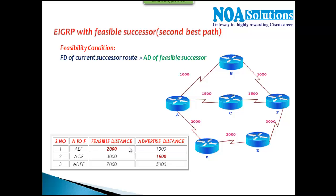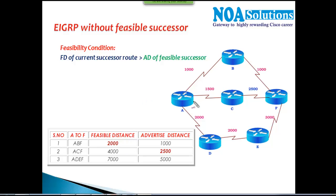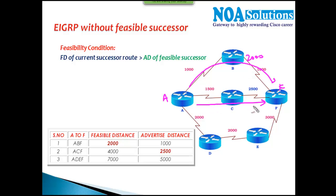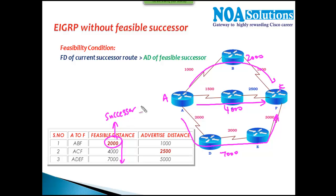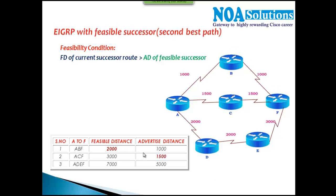Now let's look at the same topology with modified costs. From router A to router F there are again three routes. The first route costs 1000 plus 1000 = 2000. The second route costs 1500 plus 2500 = 4000. The third route costs 4000 plus 3000 = 7000. In this scenario the first route is the successor, but there is no feasible successor - no second best route is calculated by EIGRP.